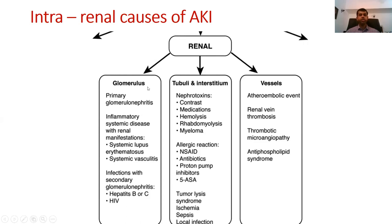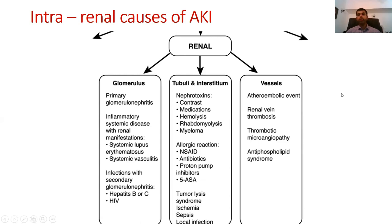In glomerular disease, the glomerulus gets damaged and urine output goes down. Tubular and interstitial conditions — nephrotoxins such as NSAIDs, certain antibiotics, rhabdomyolysis, and myeloma — can directly damage the tubules, resulting in oliguria and AKI. Vascular conditions like thrombotic microangiopathies, atheroembolic causes, and antiphospholipid syndrome cause blockages of intrarenal vasculature, resulting in reduced perfusion, low GFR, oliguria, and AKI.